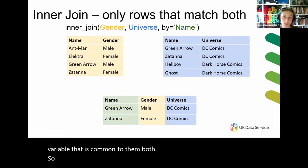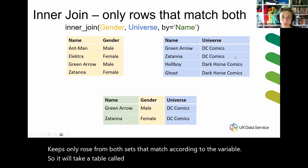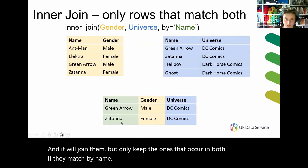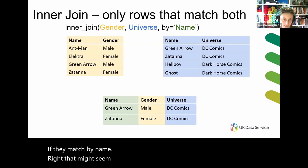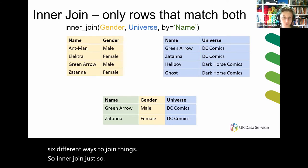An inner join keeps only rows from both sets that match according to the variable. So it will take a tibble called gender and a tibble called universe, and it will join them but only keep the ones that occur in both if they match by name. That might seem obvious, but it will get confusing because there are six different ways to join things. Inner join keeps rows from both if they match according to the designated criteria.